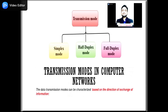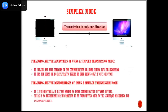First we want to focus on simplex mode. In simplex mode, communication takes place in one direction only, that is also called as unidirectional. The sender sends the message and the receiver receives it, but the receiver cannot send the data back. That is called as one-way communication. The simplex mode is not very popular as many communications require two-way data exchange.